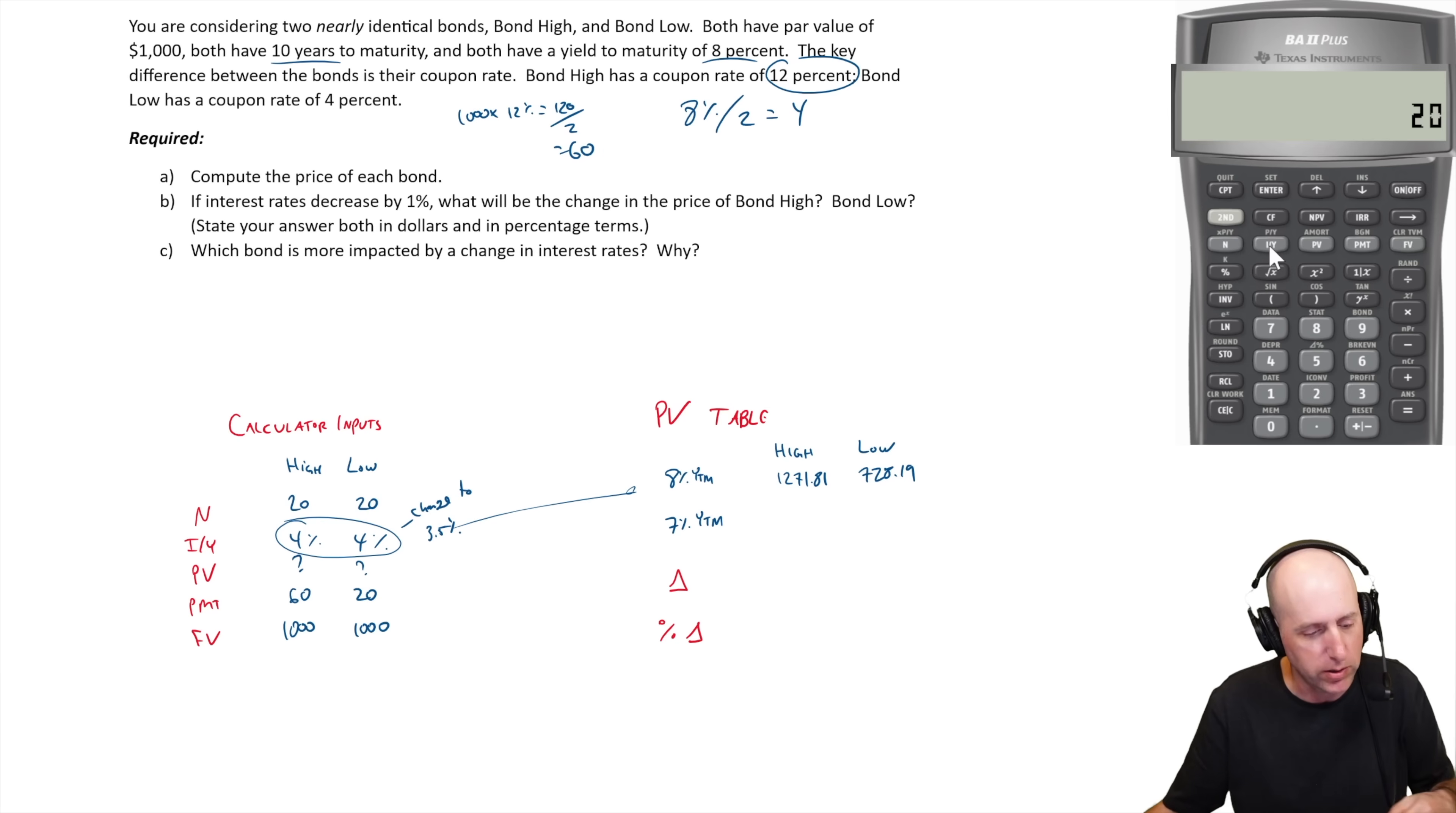20 goes in as our N, IY goes in at 3.5 this time, that's the only difference. We don't know our PV, our PMT is 60, I'm doing the high bond first, and $1,000 goes in as FV. I compute PV, I get $1,355.31. For my low one, I just change the PMT, everything else is the same. The PMT goes in at 20. I'm still expecting this to be a discount, it just won't be as severe. I compute PV, I get $786.81.